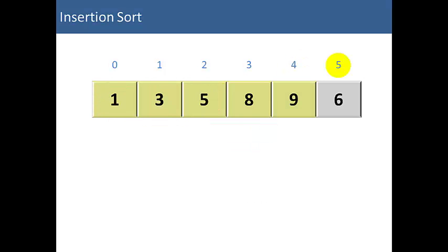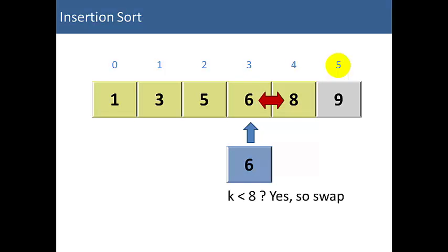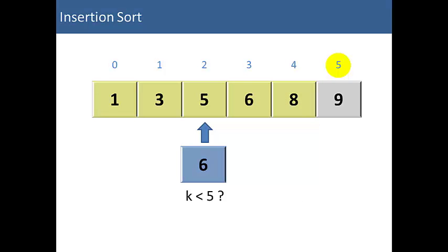So we're going to move on to item number 5, which is 6. We set k equal to 6. Our first comparison is 6 less than 9. Yes it is, so let's swap them. Next comparison is 6 less than 8. Yes it is, so we're going to swap 6 and 8. Next comparison is 6 less than 5. No it is not. So the sort is now finished. So that is our sorted array.